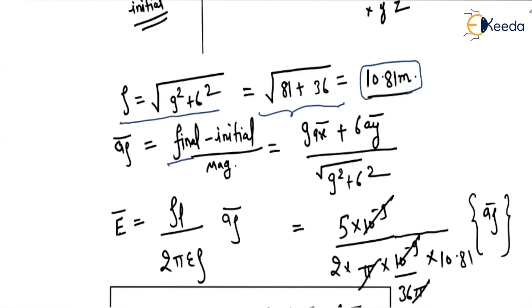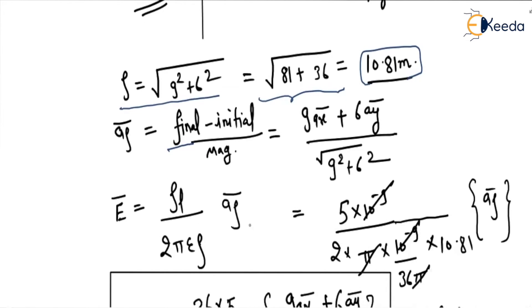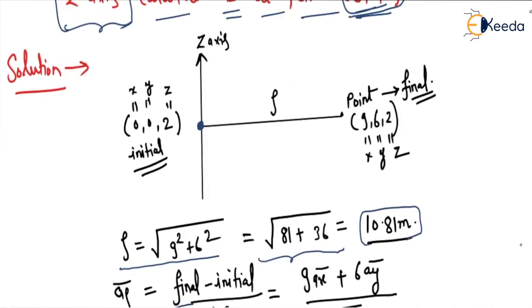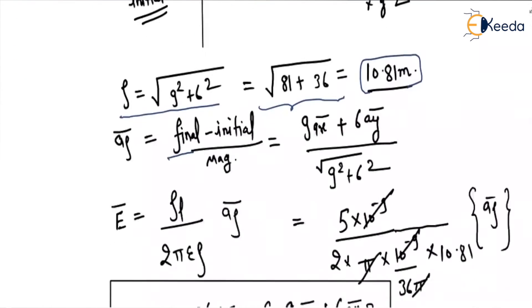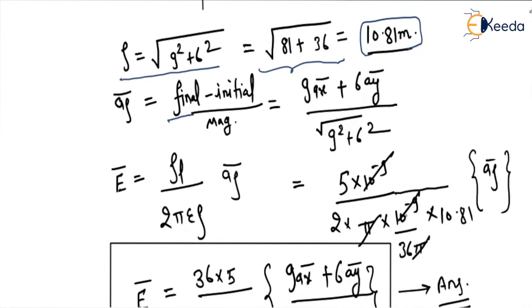So electric field equals rho_L upon 2πε₀ρ times a_rho. So it is 5 × 10^(-9) because it is given as 5 nanocoulombs, divided by 2π, epsilon is 10^(-9) over 36π, and rho is 10.81.